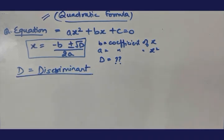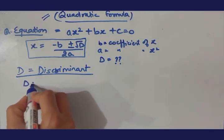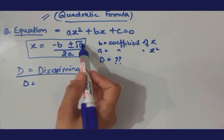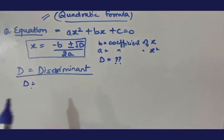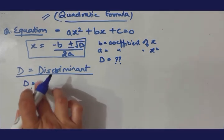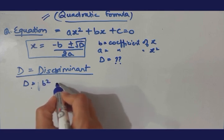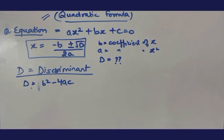But D ko hum find out kaisa karte hai? D ka bhi ek formula hai. Yaha par D ko short form kar diya hai but jab pehle aapko D nikalna padega then aapko us D ki term is formula mein likhani hai. So your D is b square minus 4ac.